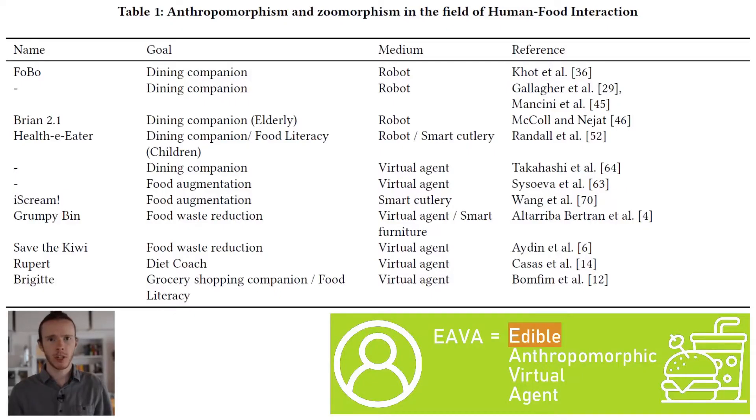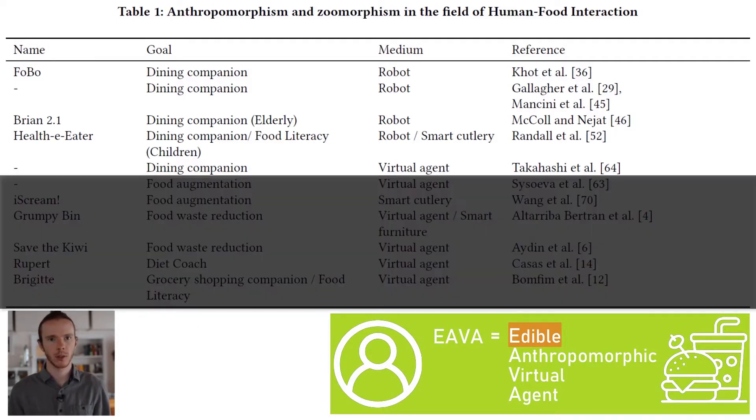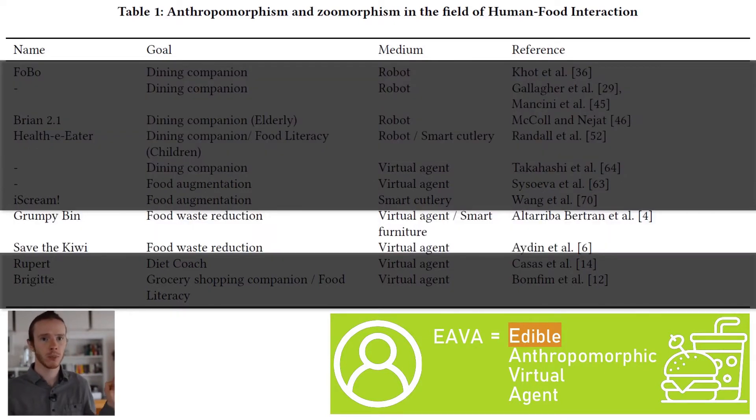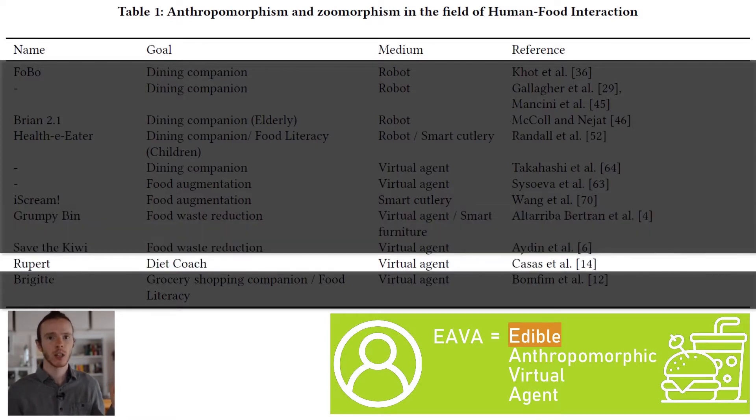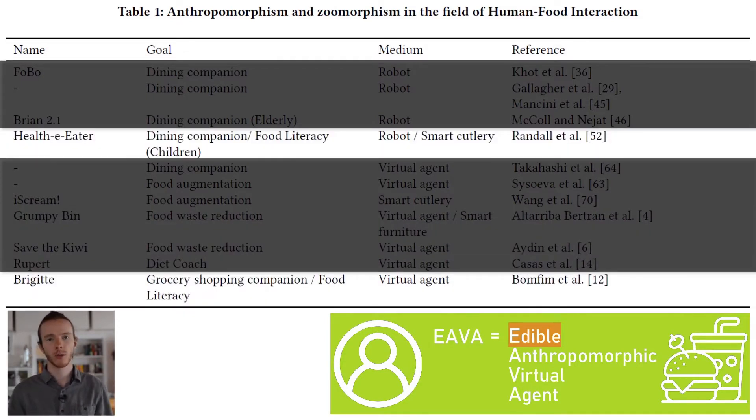There are also several examples of the use of anthropomorphism in the research field of human-food interaction. Within this field, anthropomorphism is used to create artificial food companions, to encourage people to reduce food waste, to act as nutrition coaches or to increase food literacy.